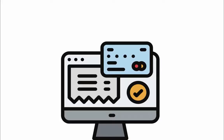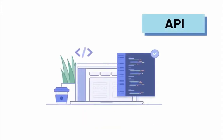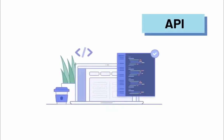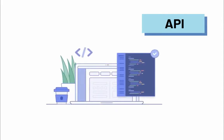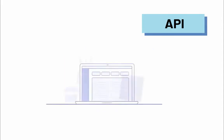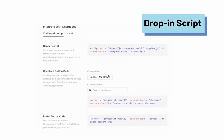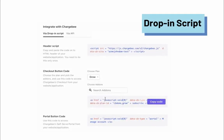When it comes to configuring checkout, you have two options. First, API — configuring checkout via API requires developer efforts. We request you to take a look at our developer documentation for that. The link to the docs is added in the description below. Second, Drop-in script — let us now see how to configure checkout via drop-in script.